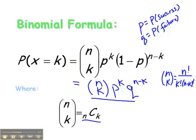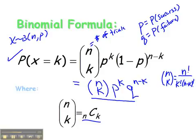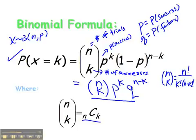This is the formula we use for binomial distributions. X is binomial with parameters N and P. N represents the number of fixed trials. K represents the number of successes we're looking at. P represents the probability of success, and Q represents the probability of failure.